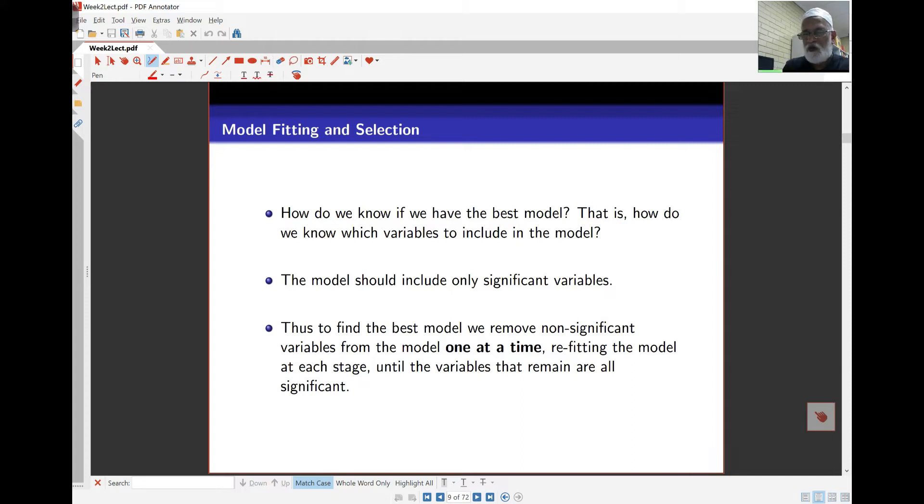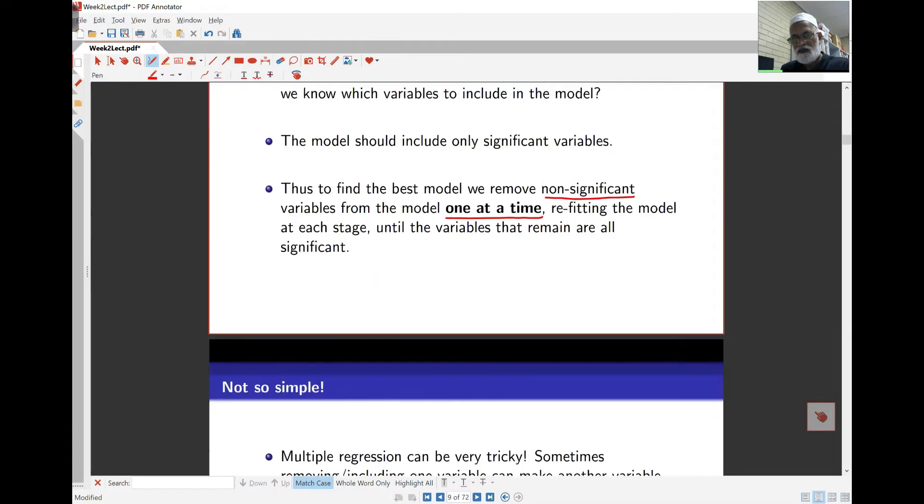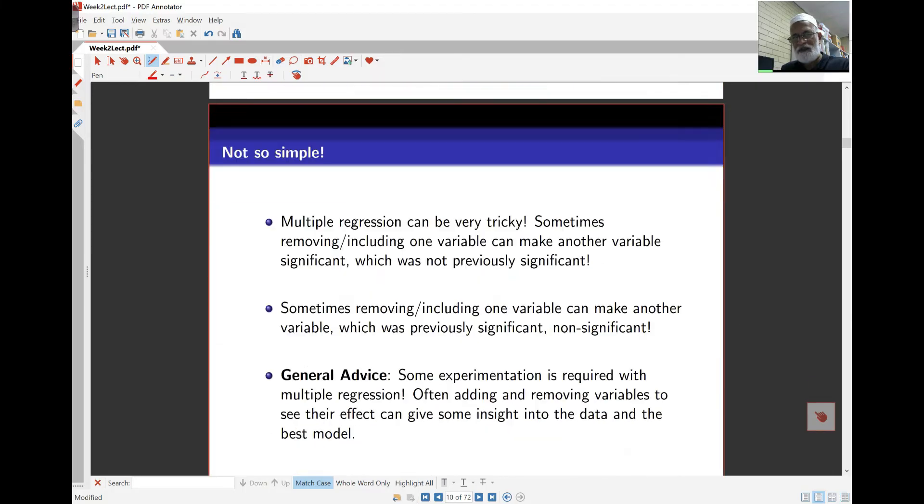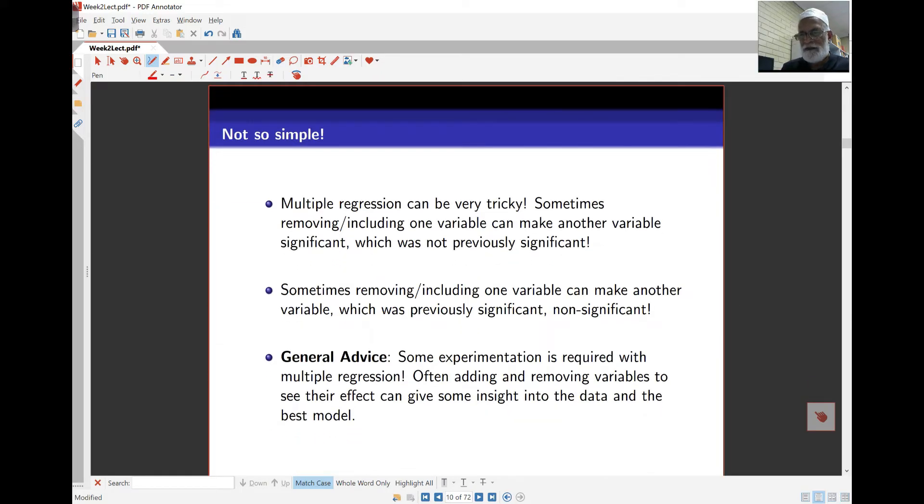Well, what we do is, we remove the non-significant variables. In other words, those variables with p-values bigger than 0.05 here, but one at a time. If you remove them all, you find things go wrong. Because the thing is, there's a lot of problems with multiple regression. Removing or including one variable can change the significance of another variable. And of course, as you remove or add variables, the coefficients for the variables also change.